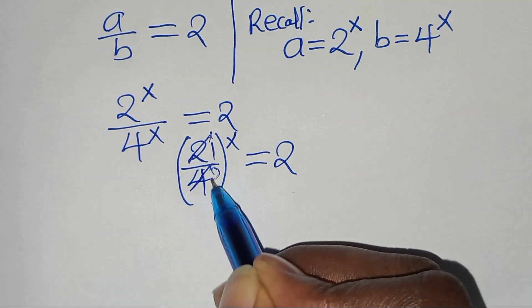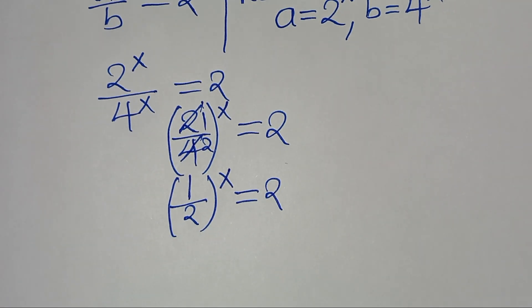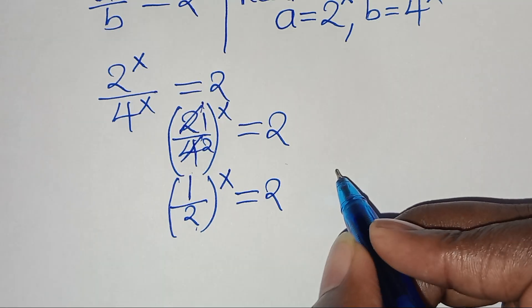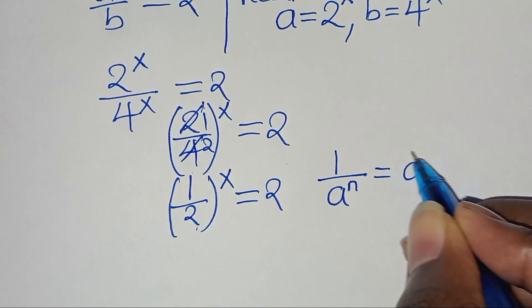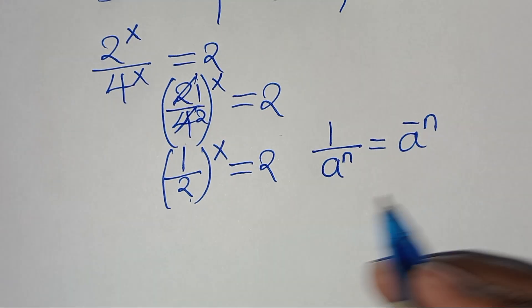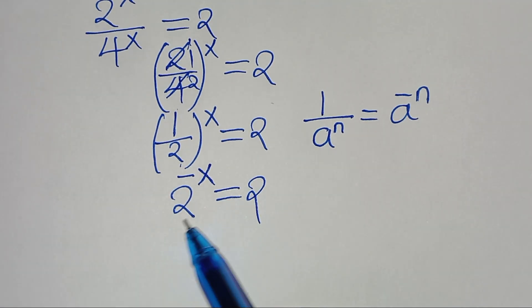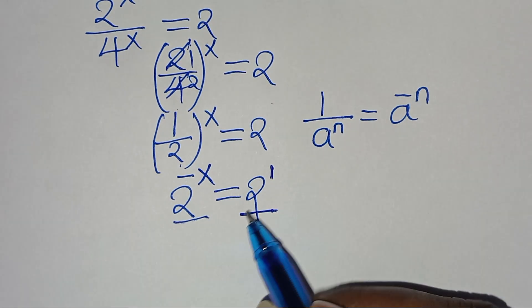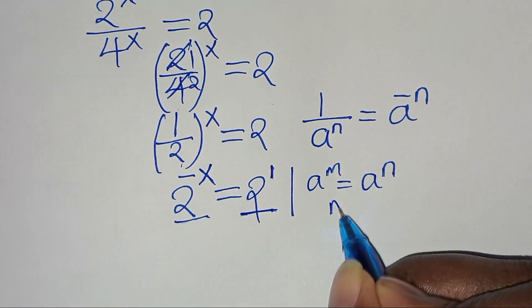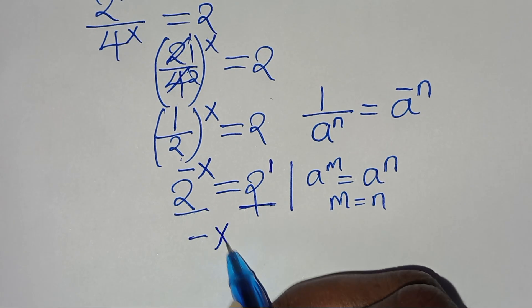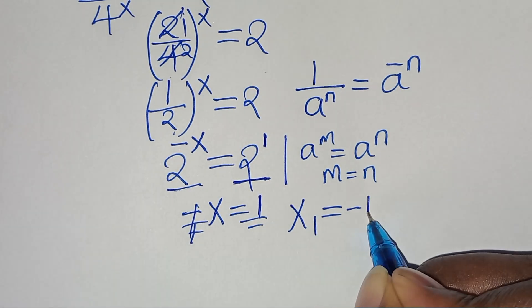Simplifying 4 divided by 2 gives 2, so we have one half raised to the power of x equal to 2. Now, one half raised to the power of x is in the form of 1 over a to the power n, which can be expressed as a to the power of minus n. Applying this property, we have 2 to the power of minus x equal to 2. Since the bases are common, 2 is to the power of 1, so minus x equals 1.